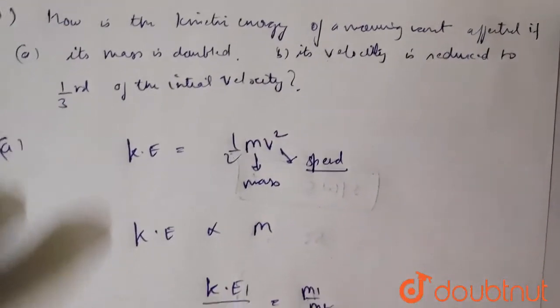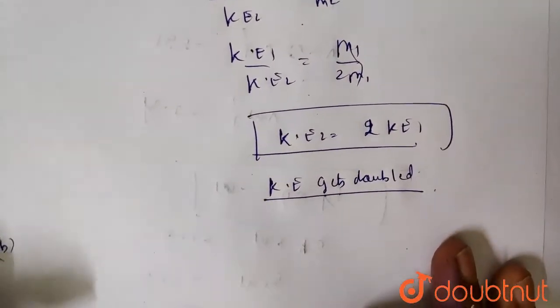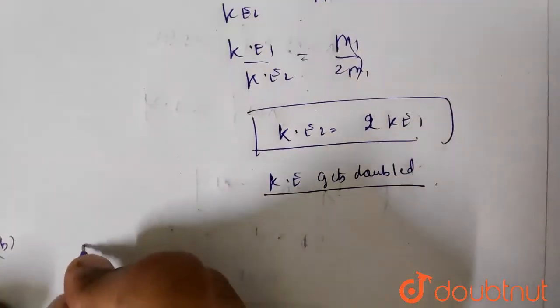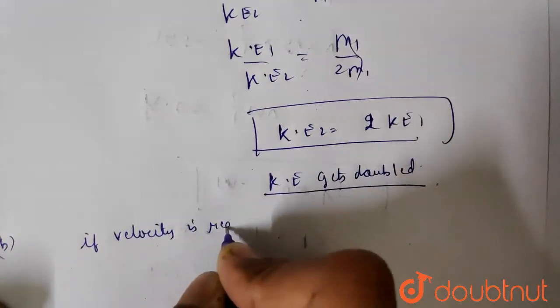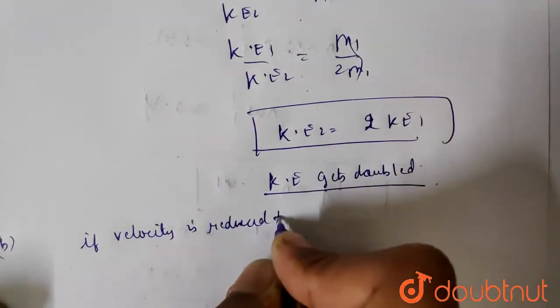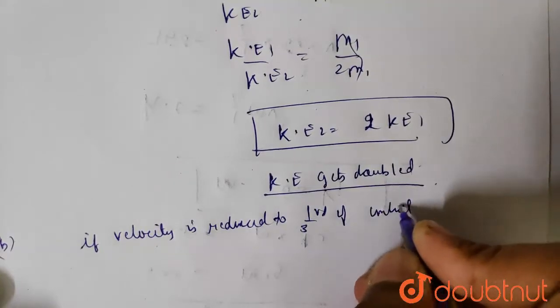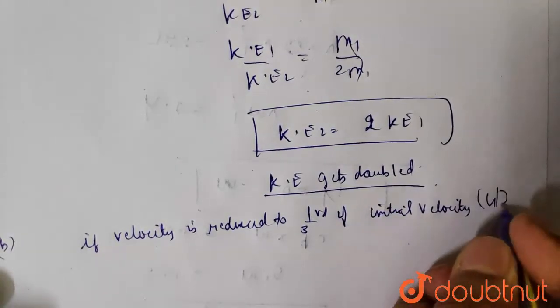Part B: If its velocity is reduced to one third of its initial velocity. Velocity is a scalar quantity in kinetic energy, so if velocity is reduced to one third of initial velocity, then kinetic energy...